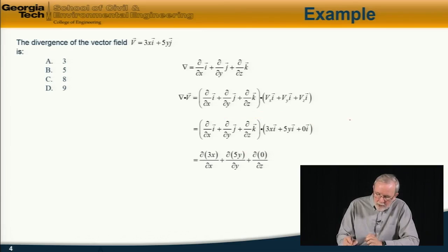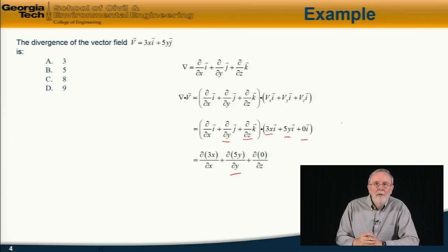So that becomes this. So we have d by dx of 3x plus d by dy of 5y plus d by dz of zero. So evaluating those differentials, that is equal to 3 plus 5, which is equal to 8. And so the answer is c.